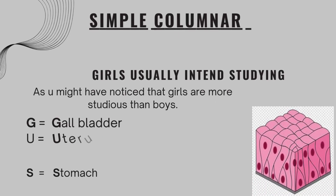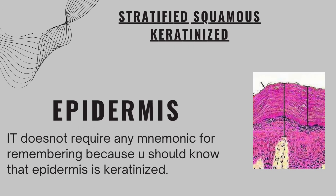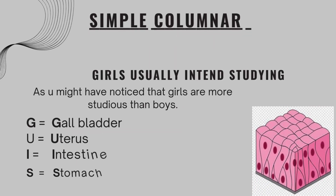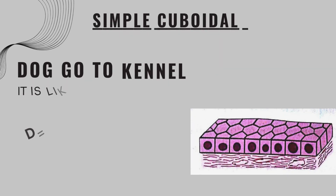Moving on to simple columnar epithelium, the mnemonic is: Girls Usually Intent Studying. As you may have noticed, girls are more studious and hardworking than boys. G stands for gallbladder, U stands for uterus, and I stands for intestine.